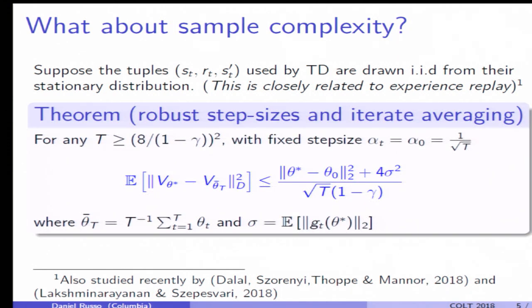And we can give bounds like this. So one example of a bound we have in the paper applies with iterate averaging and robust problem-independent step sizes. And the bound looks pretty much like what you'd get from a textbook analysis of SGD, but scaled up by a discount factor, reflecting that we're not really taking gradient steps.